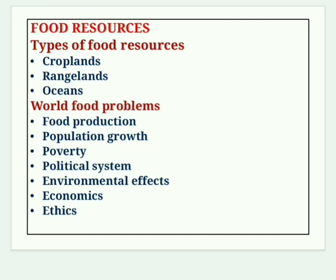Crop plants provide 76% of the world's food — wheat, rice, corn, barley, sugarcane and potato are examples. Rangelands provide about 17% of the world's food, mainly from grazing livestock; milk, meat, fruits and vegetables are examples, providing high levels of vitamins, minerals, proteins and fibers. Oceans supply 7% of the world's food — fish, prawn and crab are obtained from oceans.